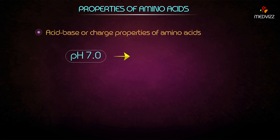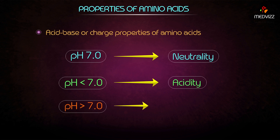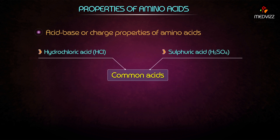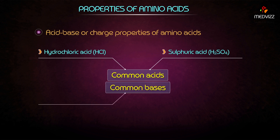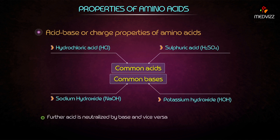A pH of 7.0 represents neutrality. pH values less than 7 represent acidity, and pH values above 7 refer to alkalinity. Some common acids are hydrochloric acid and sulfuric acid; some common bases are sodium hydroxide and potassium hydroxide. An acid is neutralized by a base and vice versa.